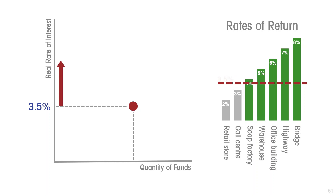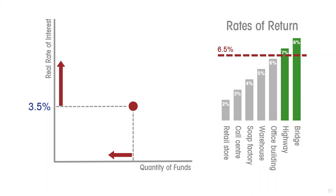If the rate of interest were higher, that would make some investment projects that were viable at a lower rate now unviable — fewer projects will yield a return higher than this new higher rate of interest. So the demand for investable funds will be less. The demand for investable funds curve is downward sloping.